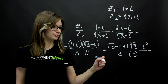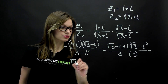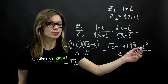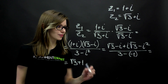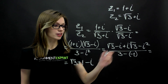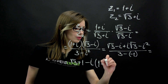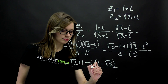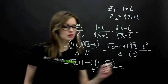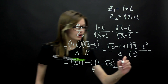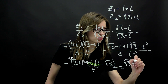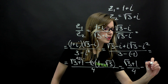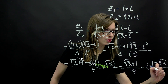Then we have square root of 3. i squared is equal to negative 1, and we have negative negative 1, which is simply 1, so we have plus 1. Minus i, and the i terms can be factored out giving 1 minus square root of 3. In the denominator, we have 4. Separating the real and imaginary parts, we'll have square root of 3 plus 1 over 4, minus i times 1 minus square root of 3 over 4.